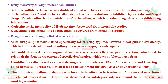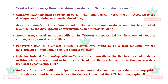Lead discovery through traditional medicine or natural product research: many traditional products are unexplored and lack scientific documentation to become a drug. Cinchona officinalis bark (Peruvian bark) was traditionally used for fevers, leading to development of quinine as an anti-malarial drug. Artemisia annua (sweet wormwood), a Chinese traditional medicine for fevers, led to development of artemisinin as an anti-malarial.